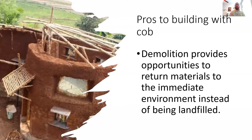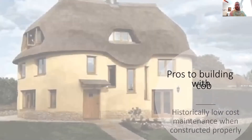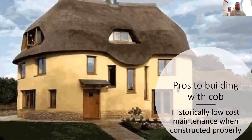Another great benefit to building with cob is low demolition cost. Because you source most of the materials from the site, you don't have to dump a lot into a landfill, which also helps cut down on embodied energy costs since the material doesn't have to be landfilled at the end of its use. A lot of people who live in cob homes claim that when constructed properly, they are historically low maintenance, though like any structure, it is going to require some maintenance.